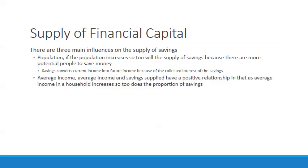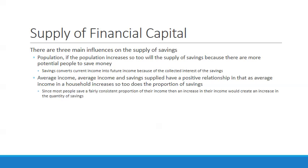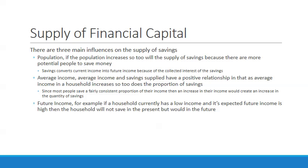If you're saving 5% of your income and your income increases by $50,000, your savings would increase proportionally. The third influence is future income: if a household currently has low income but expects high future income, it will not save much in the present but will save more in the future. As income increases, people become more willing to save.